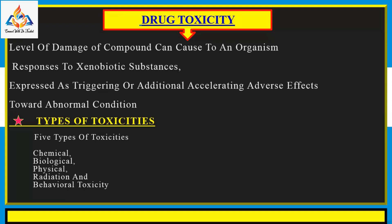Drug toxicity may occur when a person has consumed a dose of a drug that is too high for them to handle. It may also occur when the person's liver or kidneys are unable to function properly and clear the drug from the bloodstream, causing it to build up over time until it starts to cause problems. There are different types of toxicities including chemical toxicity, biological, physical toxicity, radiation, and behavioral toxicity.